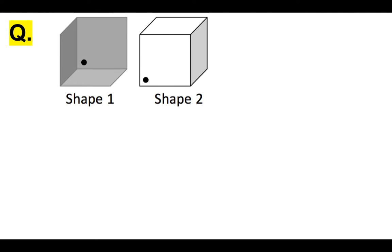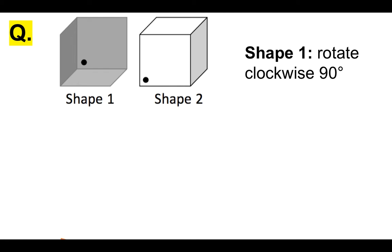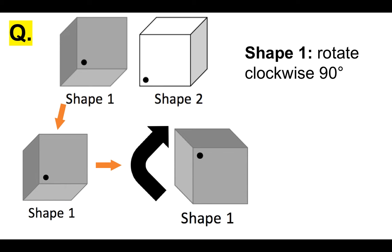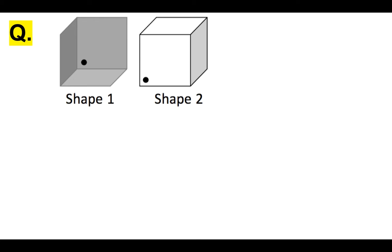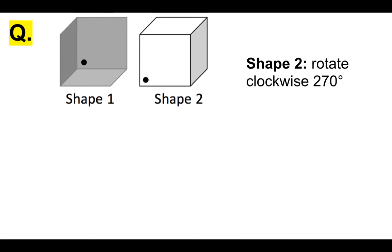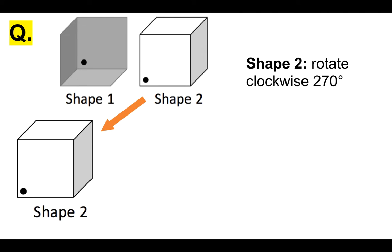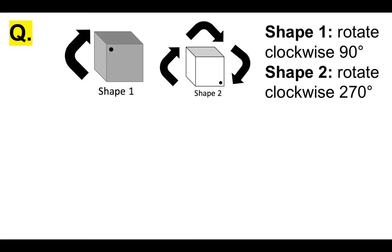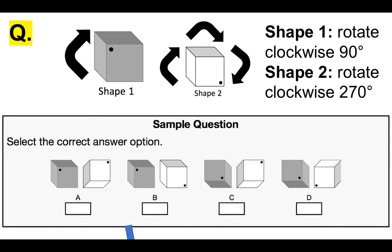Let's break this down in simple terms. SHAPE 1 has to be rotated clockwise 90 degrees — clockwise being the direction a clock goes, to the right — and we move it one space round, that's 90 degrees; that is where the black dot will end up. Now SHAPE 2: we have to rotate clockwise 270 degrees. If 90 degrees is one turn, there are three 90s in 270, so we have to move it three turns. In a full turn it's 360, in three turns it's 270. So we move it three turns and that's where the black dot ends up. Looking at the answer options, B is the only correct answer — therefore, we would select B.